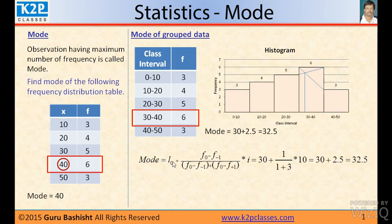Mode equal to l0. Mode equal to l0, nothing but the lower limit of the mode class. This is the mode class, 30. f0, frequency of the mode class minus f minus 1, frequency of just above class, divided by f0 minus f minus 1, that is frequency of just above class, plus f0 minus f plus 1, frequency of the just after mode class, into class interval.